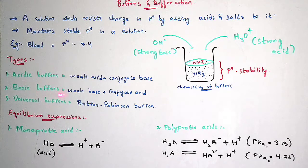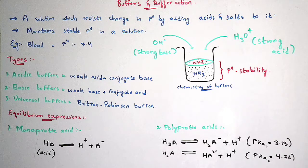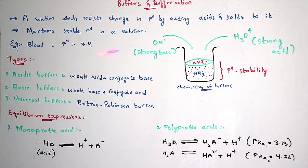Coming to the universal buffers, Britton-Robinson buffer is one of the most important examples which will be asked in your entrance examinations. I will explain these three types of buffers later. Buffer action can be explained by taking examples of weak acid and conjugate base for each and every buffer, and I will explain this mechanism later.